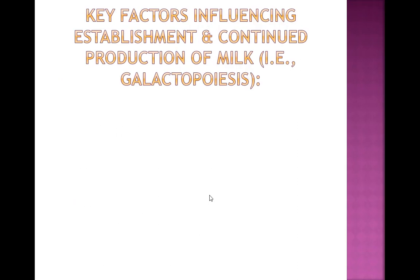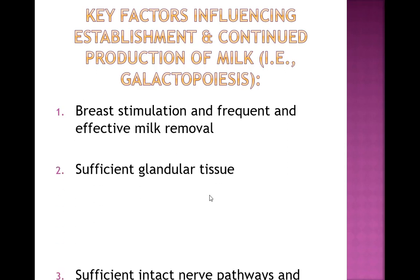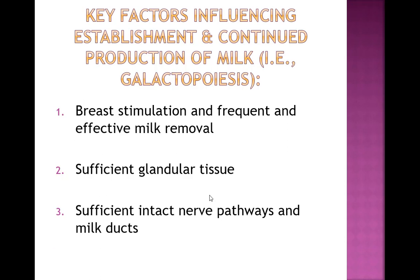Let's talk about the specific factors that influence the establishment and continued production of milk — what it takes to get to galactopoiesis. There are three key factors: first, breast stimulation and frequent and effective milk removal; second, sufficient glandular tissue; and third, sufficient intact nerve pathways and milk ducts.